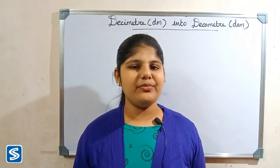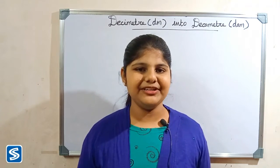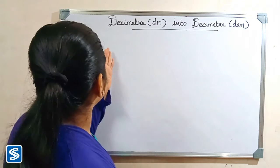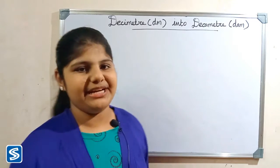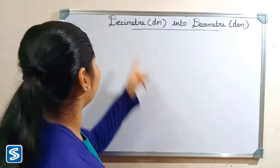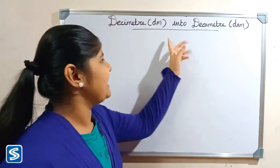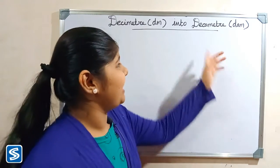Hi friends, welcome to SOMS channel. In this video I am going to teach how to convert decimeter into decameter. Decimeter and decameter are the units of length. The short form of decimeter is dm, the short form of decameter is dam.